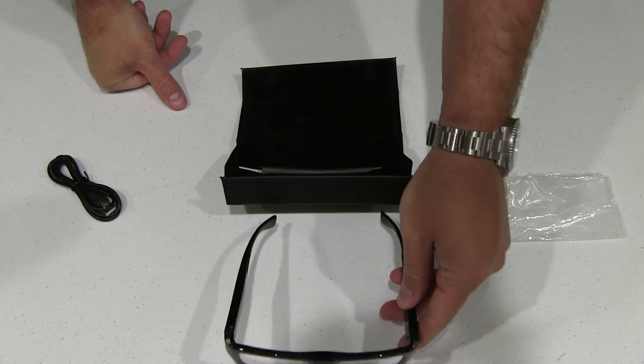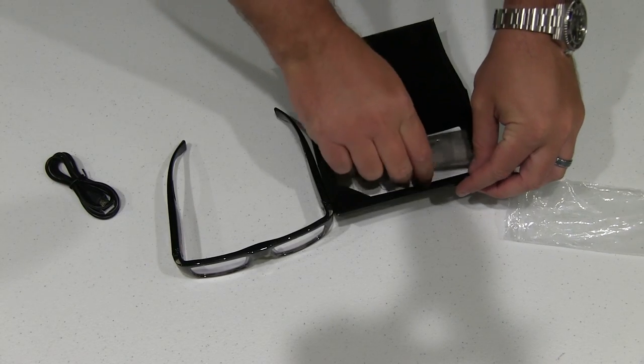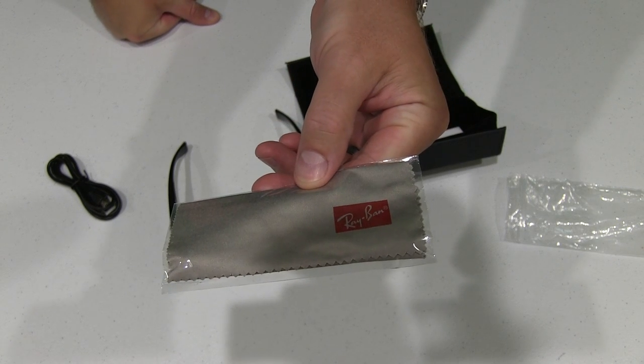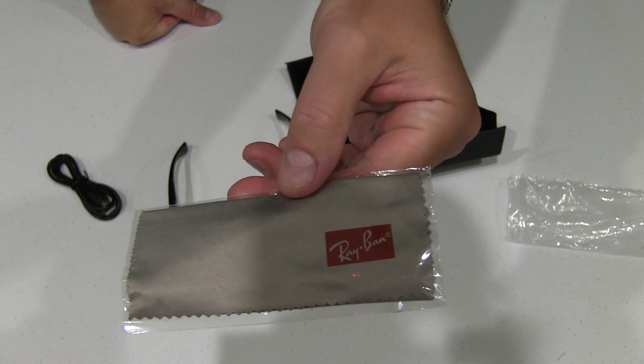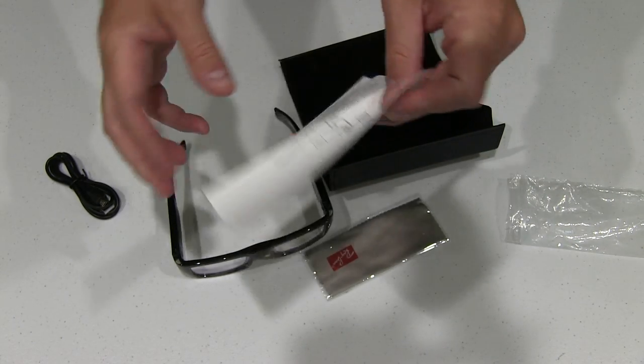So again, this is just the unboxing video. We're going to see what all is in this box. So we've got the USB cable. Then we have a, that's neat, a microfiber cleaning cloth that comes with it. And then a user's manual.